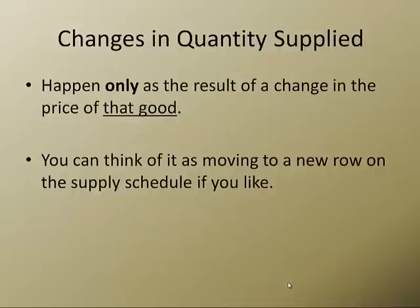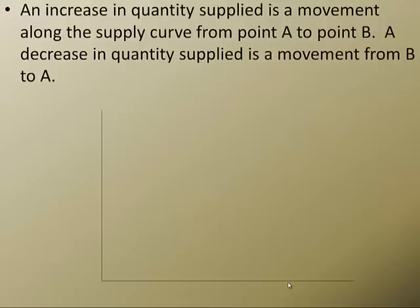Alright, now quantity supplied only changes when the price of that good changes. So it's like moving to a new row on our supply schedule. So think about the difference between the number of students willing to sing karaoke for $10,000 versus the number who would sing it for $5. So let's take a look at what that looks like.